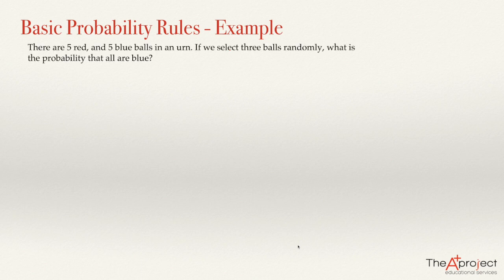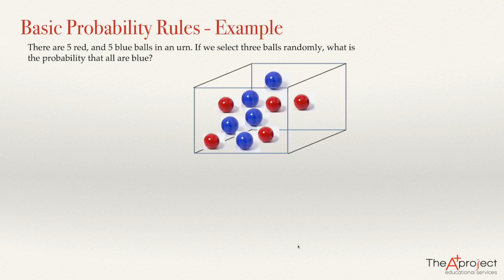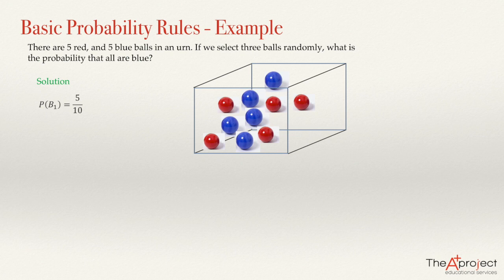There are five red and five blue balls in an urn. If we select three balls randomly and blindly, we can picture an urn like this where we have five balls that are red and five blue. We can call B1 the event that the ball we select is blue.